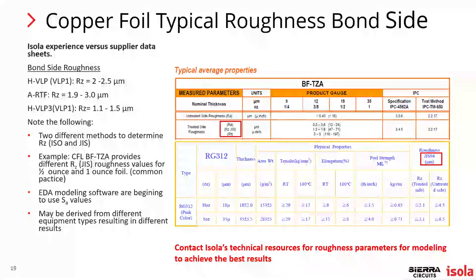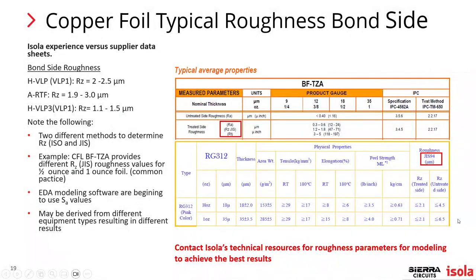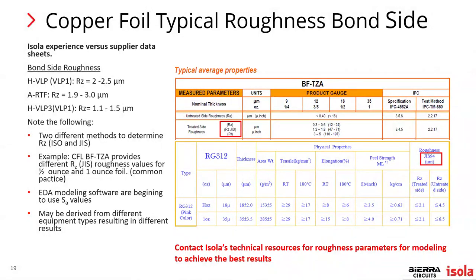Circuit Foil uses the JIS measurement method. Roughness values change based on copper weight — one-ounce versus half-ounce, as shown in the middle of the chart. EDA modeling software is starting to use the SA values. These may be derived from different equipment types resulting in different results. There were actually two round robins conducted at IPC, and they found they couldn't measure a single standard and get the same values. It's still a work in progress, but the industry is getting closer to standardizing these measurement methods.